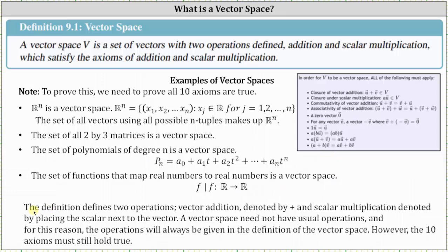Before we go, the definition does define the two operations: vector addition, denoted by the plus sign, and scalar multiplication, denoted by placing a scalar next to the vector. However, a vector space need not use the usual operations, and for this reason, the operations will always be given in the definition of the vector space. Just keep in mind, the 10 axioms must still hold true under the definitions of the operations in order for the set of vectors to be a vector space. I hope you found this helpful.